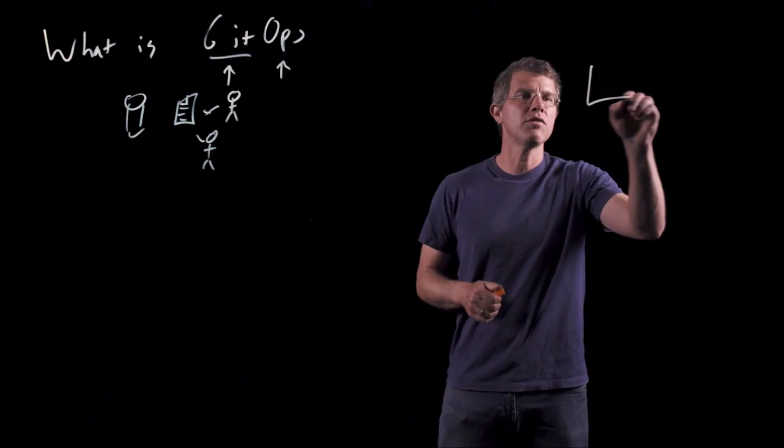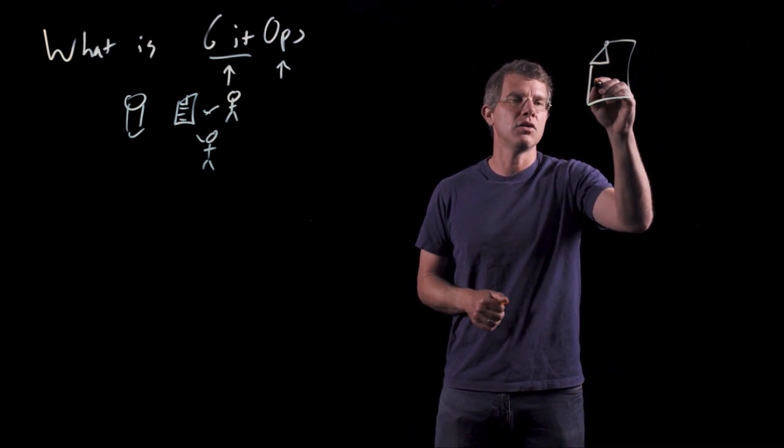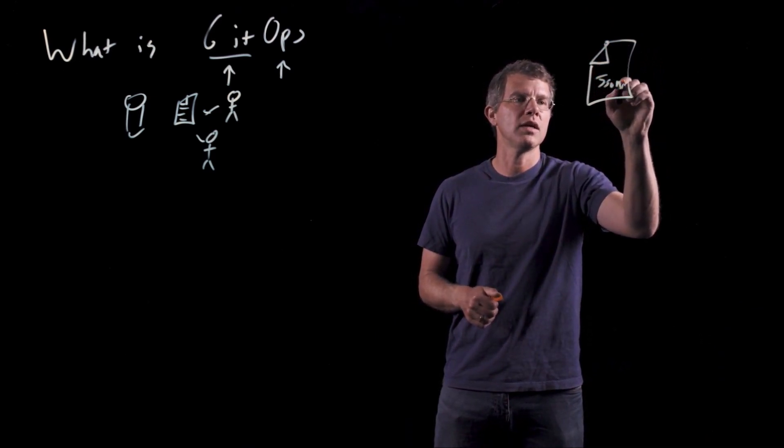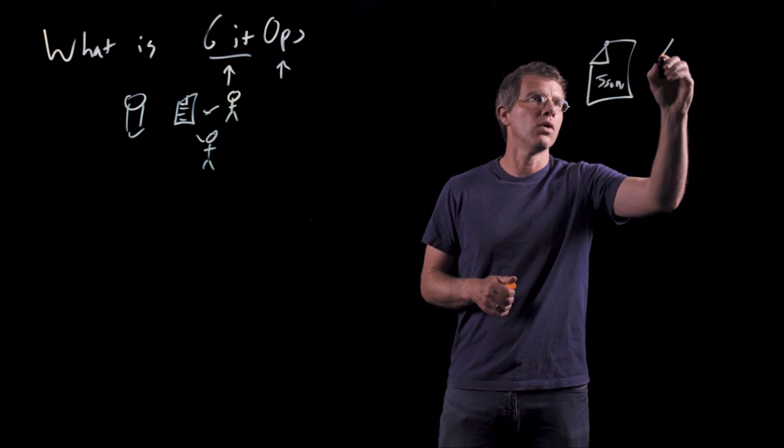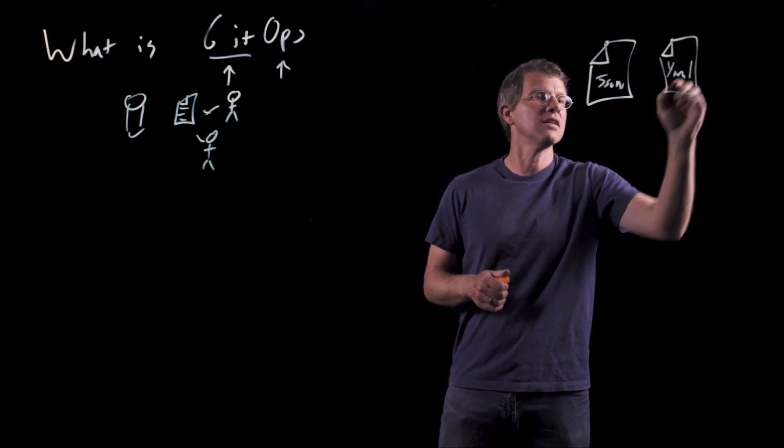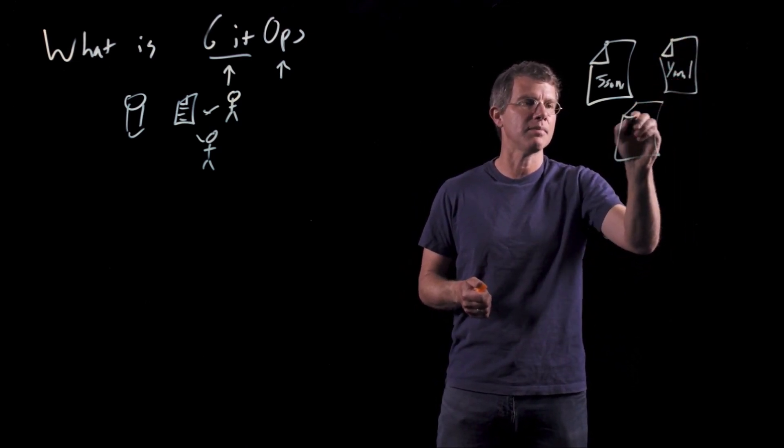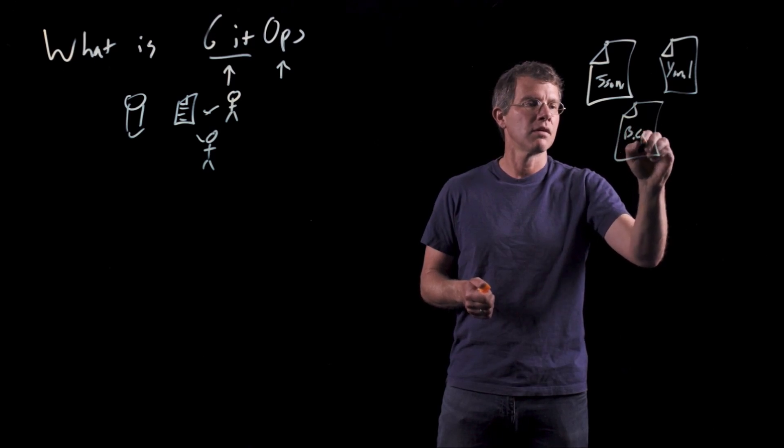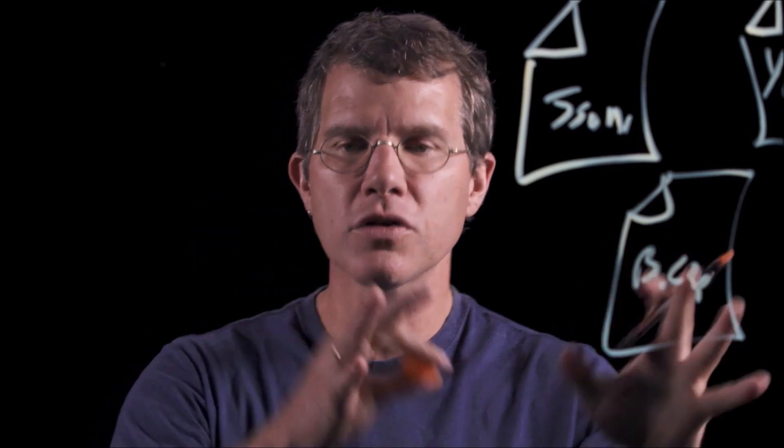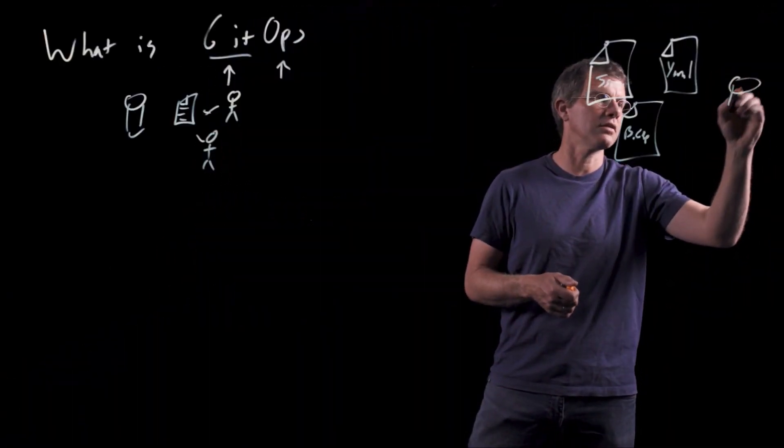All right, so let's take a look at the details of what GitOps looks like. Maybe some of you are familiar with the JSON that's associated with an ARM template, or the YAML that's associated with Kubernetes, or maybe you're even discovering Bicep, which is a new way of managing infrastructure as code on Azure.